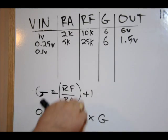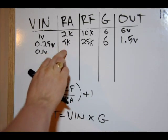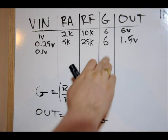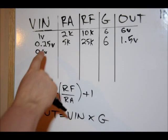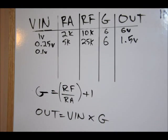Still have a gain of 6. 25k divided by 5k is 5 plus 1 is 6, and our output voltage is 1.5 volts. 0.25 volts times 6 is 1.5 volts.